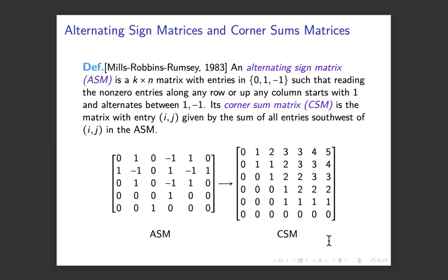And if you read along any row left to right and you ignore all the zeros, you should see the non-zero entries alternating. It should always start with a 1, and then it comes a minus 1, and then a 1, and then a minus 1, and so on. And if you read up a column, the non-zero entries should start with a 1 and then alternate as you go up.